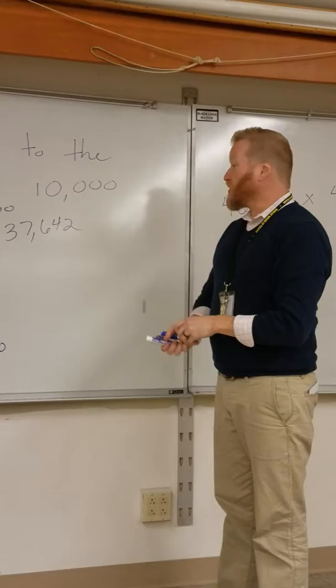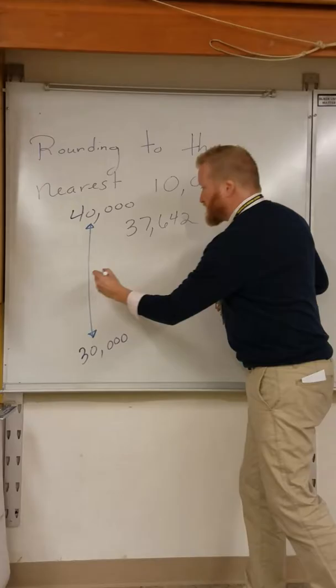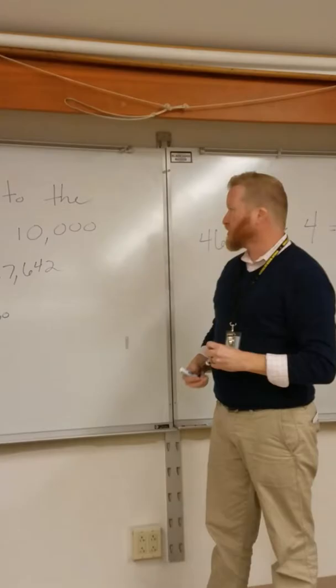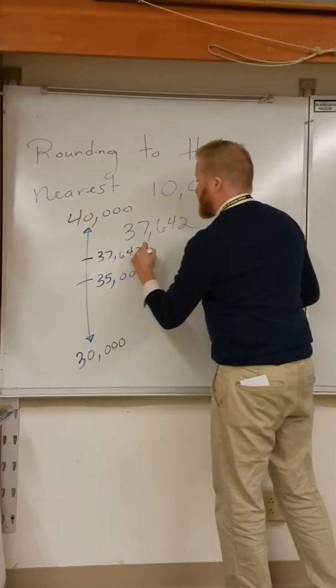We then ask students to figure out what is the midpoint. What is halfway between 30,000 and 40,000? In this case, 35,000. We then ask students to place the number that we're trying to round. In this case it's 37,642. Well, I'm going to place that right here.